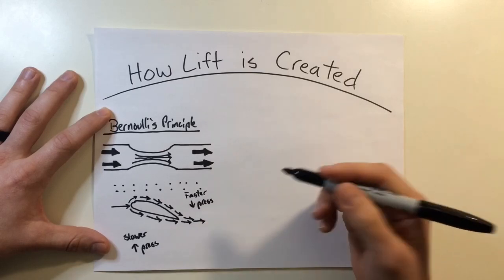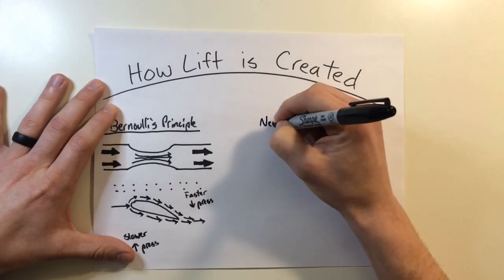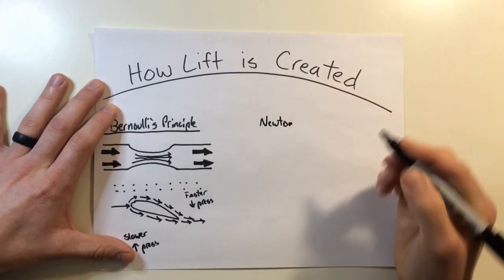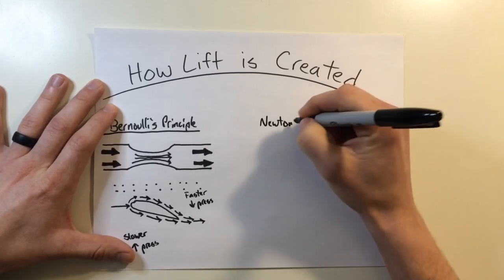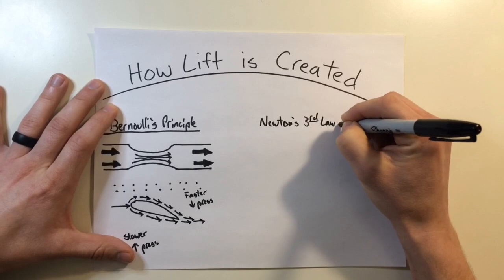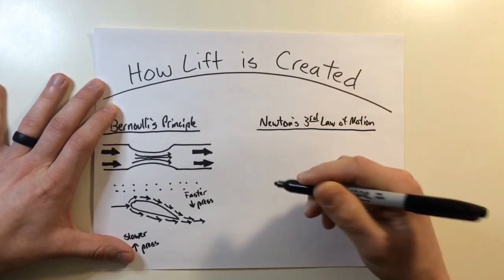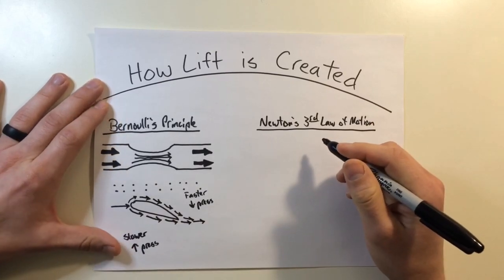Another theory that has been around for explaining lift comes from Sir Isaac Newton. We've talked about him in a few of our other videos. Newton's third law of motion, to be more specific, states that for every action there's an equal and opposite reaction.